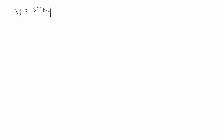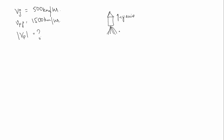In the question, the velocity of the jet is equal to 500 km per hour, and the velocity of products with respect to the jet is 1500 km per hour. We need to find the magnitude of velocity of products. The jet is moving along the positive y-axis, but its products will move downwards in the negative y-axis.